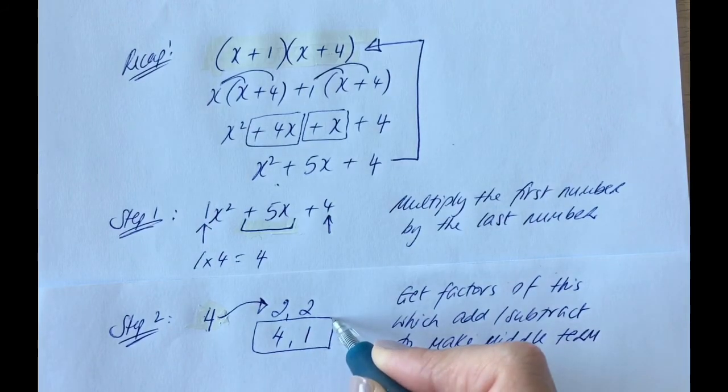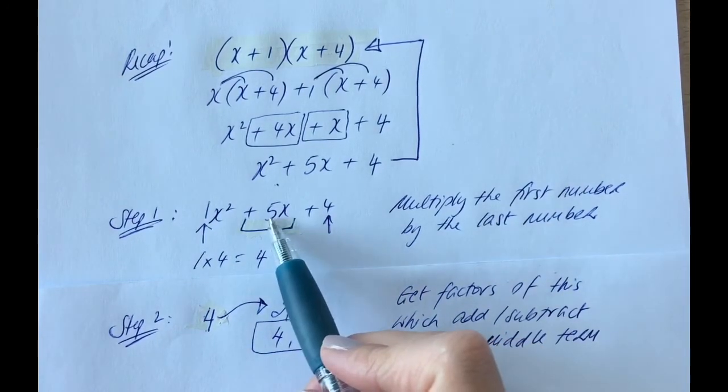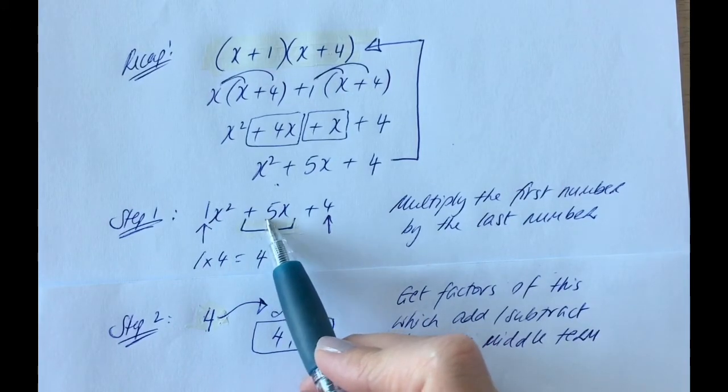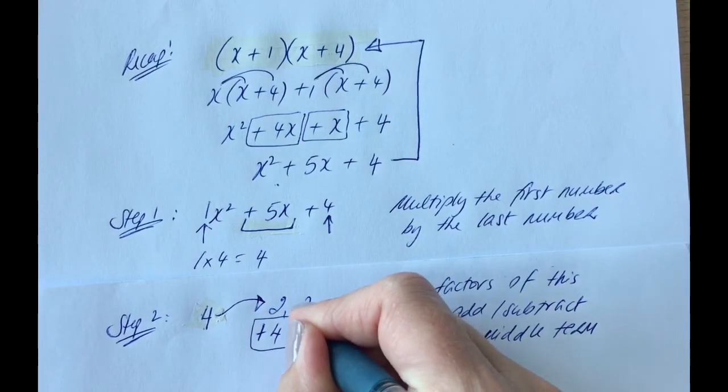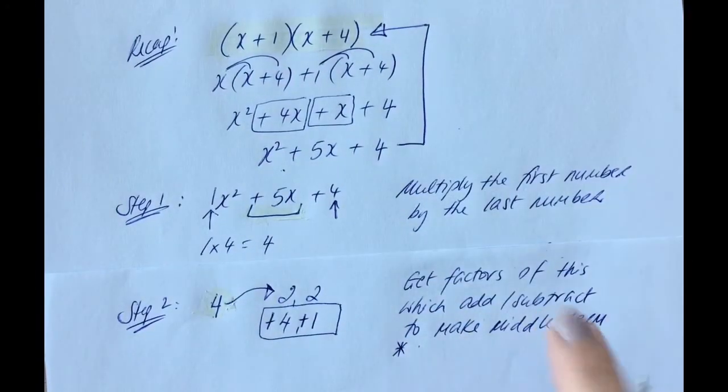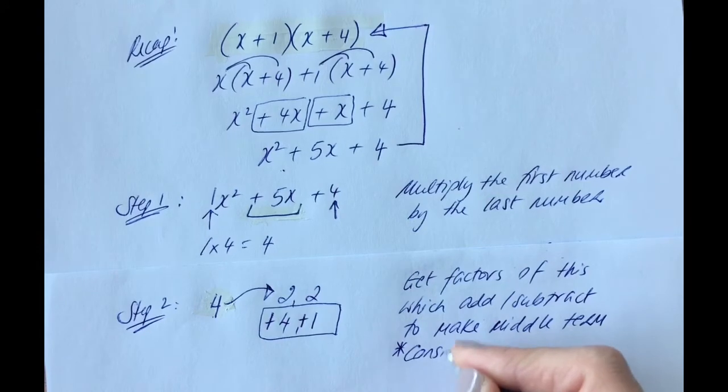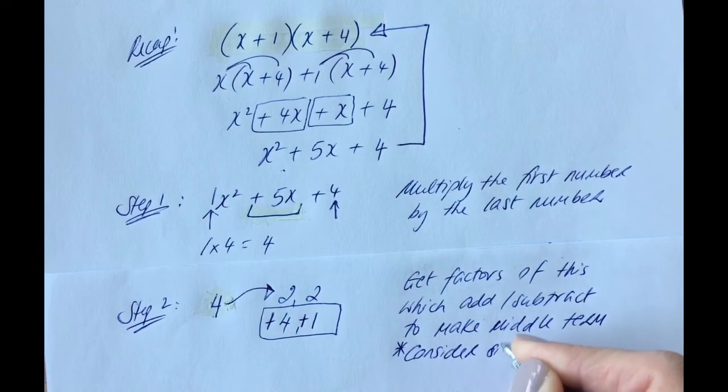Now, consider the signs at this point. What signs would they have to be to make the sign we need? So we need a plus 5 here for the middle term. So this would need to be a plus 4 and a plus 1. So it's really important in this step to consider signs.